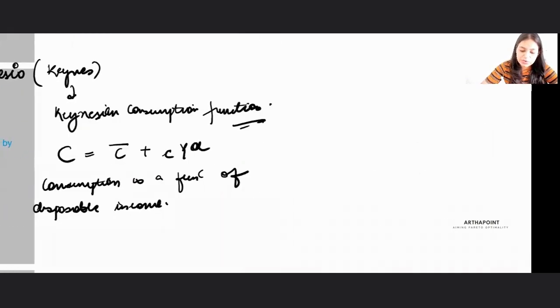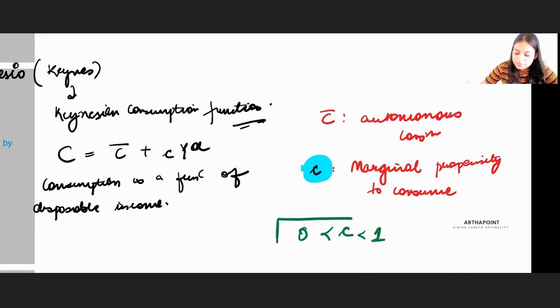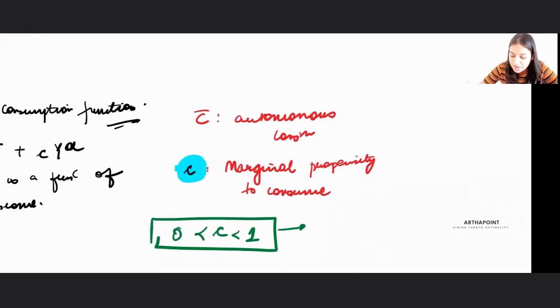We know here that C bar is autonomous consumption and small c is marginal propensity to consume. This small c, this marginal propensity to consume, is between 0 and 1. So it tells me how my consumption will change when my disposable income will change.